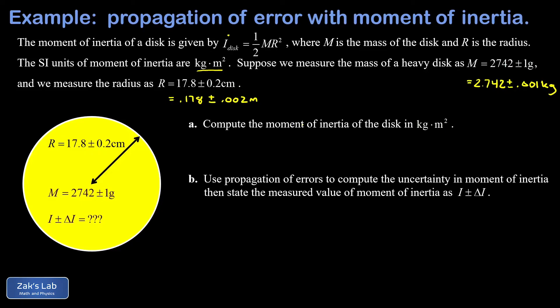In part A we're going to compute that moment of inertia, and then in part B we apply the propagation of error to get the uncertainty. So we just plug in M, and we have one half times 2.742, we plug in R, that's 0.178, and don't forget to square that.